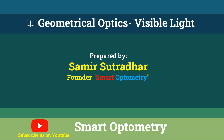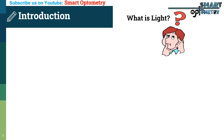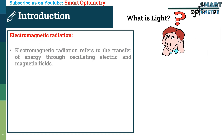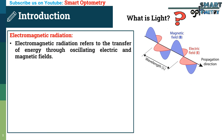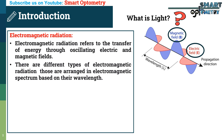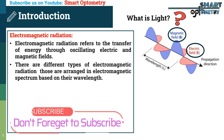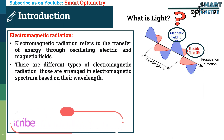Today I will discuss about visible light. What is light? To understand what is light, first we need to know what is electromagnetic radiation. Electromagnetic radiation refers to the transfer of energy through oscillating electric and magnetic fields. There are different types of electromagnetic radiation, and those are arranged in the electromagnetic spectrum based on their wavelength.